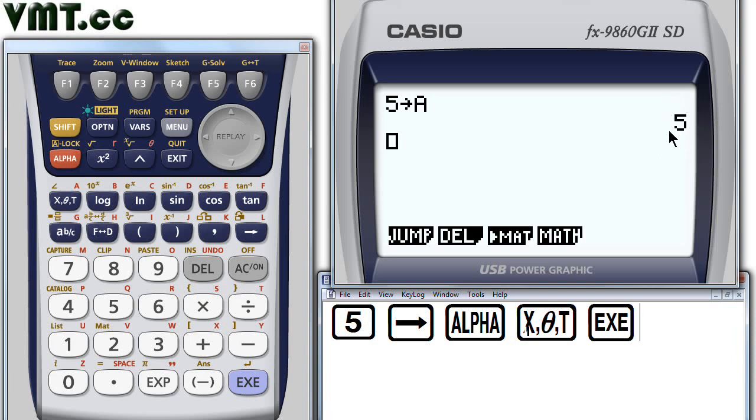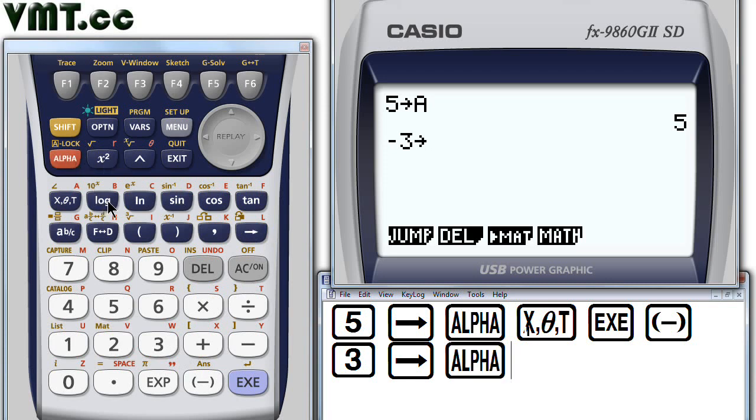Next, let's store negative 3 into variable b. Press the negation key for negative, and 3, store, alpha, and then the log key for the variable b. Execute. Again, the calculator displays the current value of negative 3.